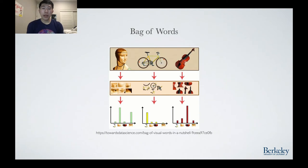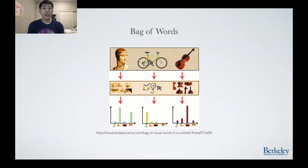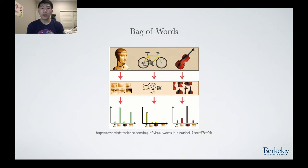The way frames are described is using an algorithm called bag of words. The idea behind bag of words is to form a description of a frame using a vector of words. The similarity between any two frames is how many words the two frames share in common. The words assigned to each frame are created using patches of the image. If two images contain a similar region, that similar region will be assigned the same word in both images, increasing the similarity between these images.